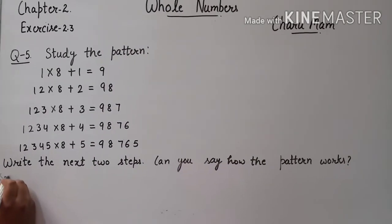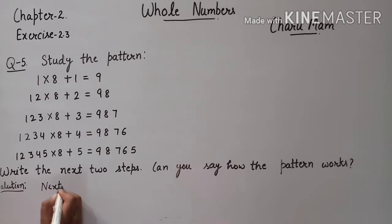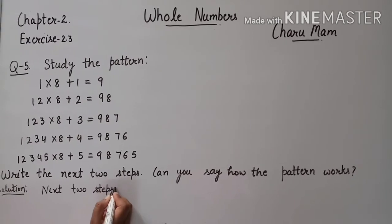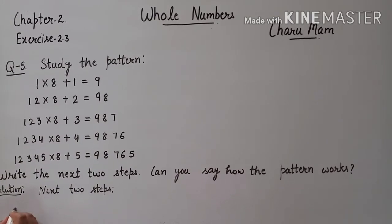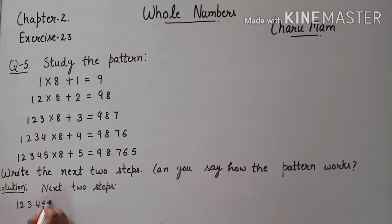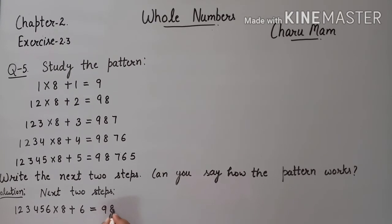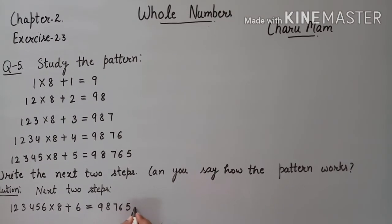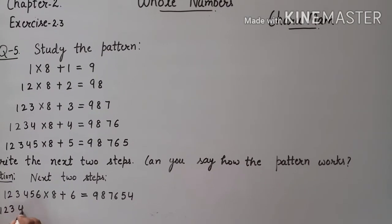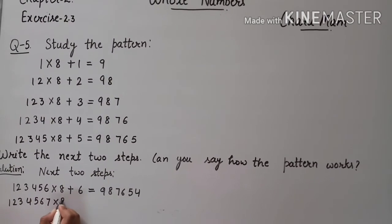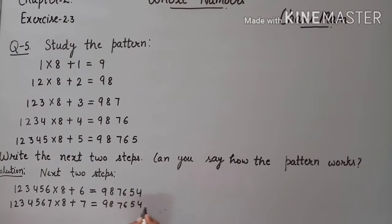Now we start solution — we write next two steps. यहाँ पर 1,2,3,4,5 था तो next में 6 आ जाएगा: 1,23,456 × 8 + 6 = 9,8,7,6,5 — यहाँ पर 5 के बाद एक digit कम हो जाएगी, यानि 4. अब next step: 1,234,567 × 8 + 7 = 9,8,7,6,5,4,3.